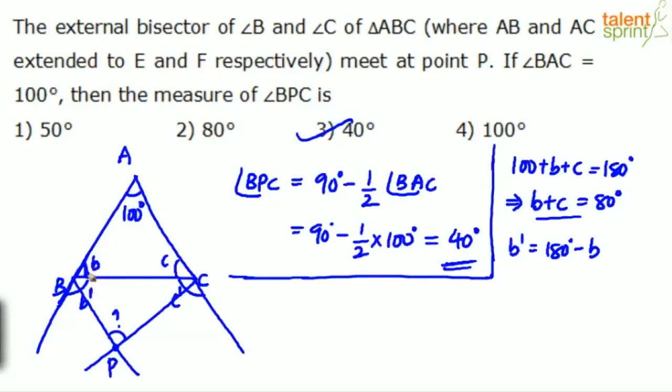B dash is 180 minus B. What about C dash? C dash can be taken as 180 degrees minus C. So we can conclude that B dash plus C dash is equal to 180 degrees minus B plus 180 degrees minus C. So this comes out to be 360 degrees minus B plus C.